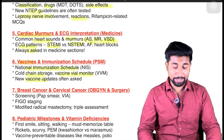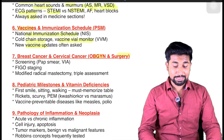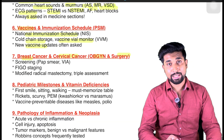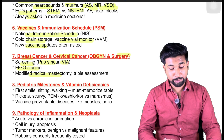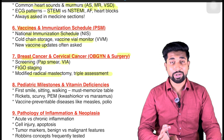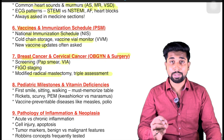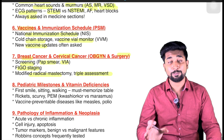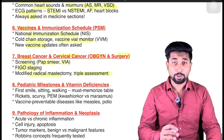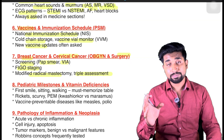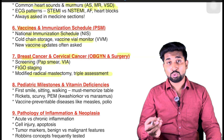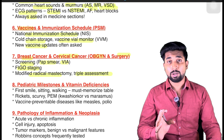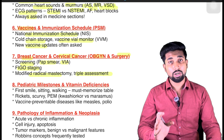From OBGYN and surgery, breast cancer and cervical cancer are very, very important. Cover screening, Pap smear, VIA, FIGO staging, modified radical mastectomy, and triple assessment. From surgery, revise burns — how to calculate burn surface area for adults and for children. For OBGYN, look at instrument photographs — at least one to two questions will definitely come from instruments, whether surgery or OBGYN.